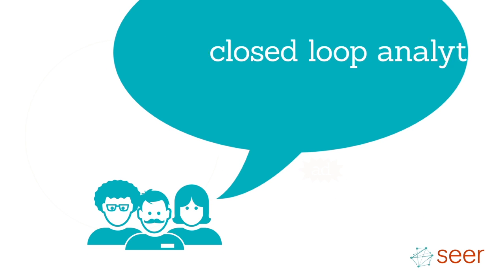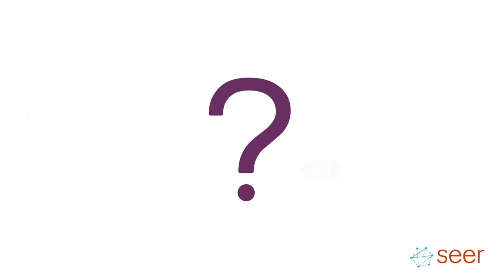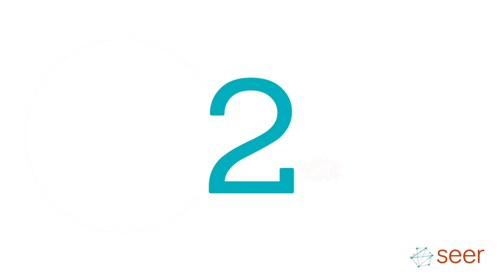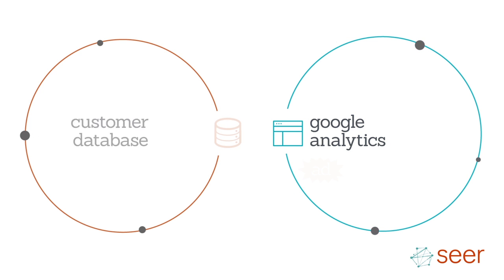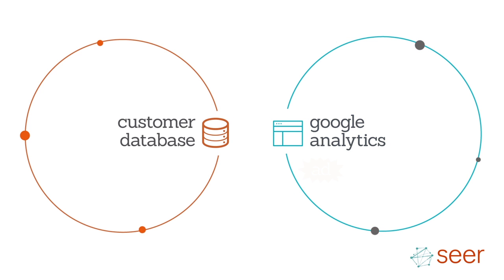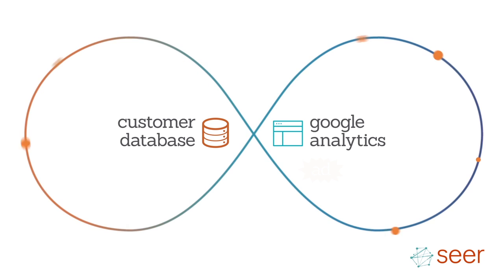So, what is closed-loop analytics? Chances are your business has at least two data sources: website data, such as Google Analytics, and sales data, which can live in an electronic customer database. Closed-loop analytics, quite simply, is tying those two sources of data together to get a holistic view of the customer's journey, from initial contact with your brand to sales.